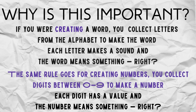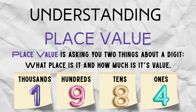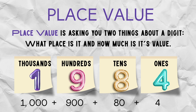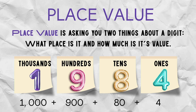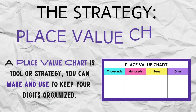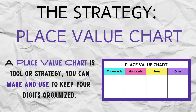Understanding place value is easy. Take a look at the number one thousand nine hundred eighty-four. The one is in the thousands, the nine is in the hundreds, the eight is in the tens, and the four is in the ones. So when we look at place value: the one is one thousand, the nine is nine hundred, the eight is eighty, and the four is four.